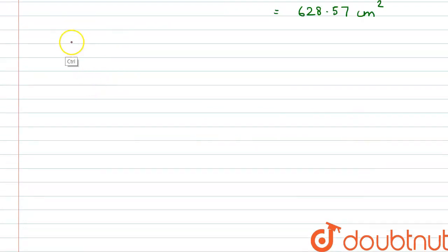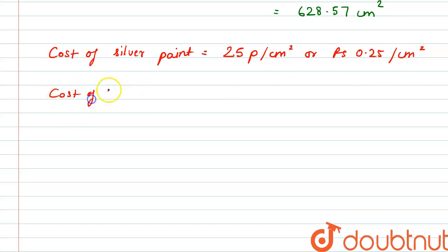So now we are given in the question that the cost of silver paint is 25 paise per cm² or we can say that as rupees 0.25 per cm². And similarly the cost of black paint is 5 paise per cm² or we can also write this as rupees 0.05 per cm².